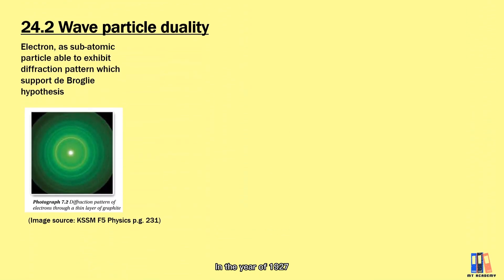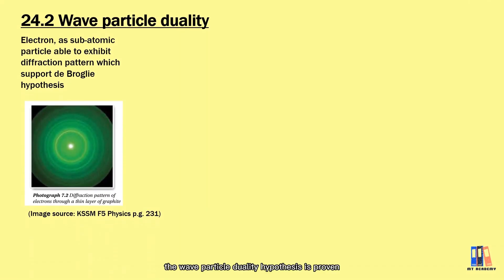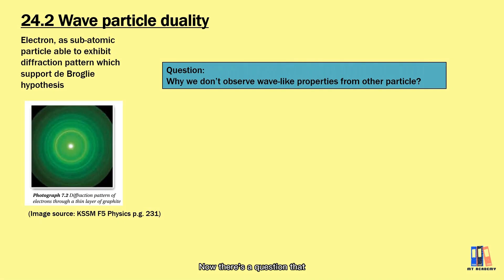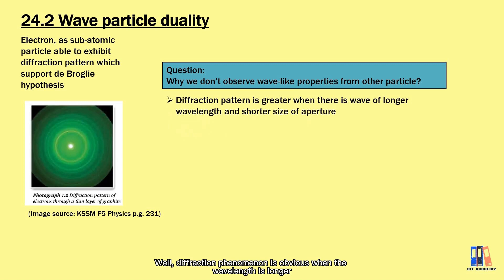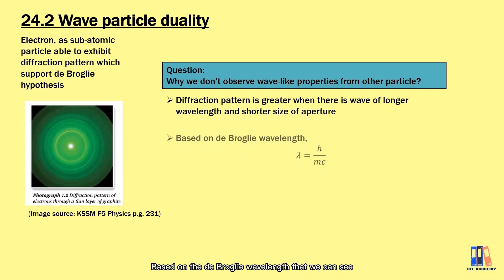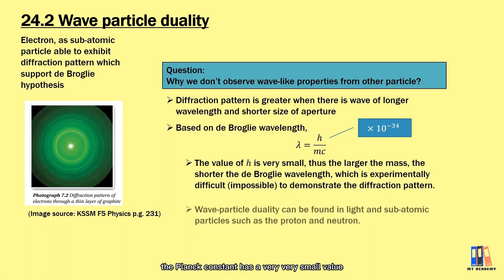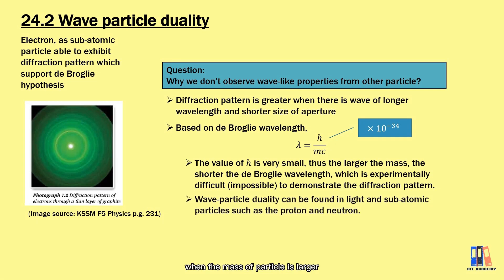In the year of 1927, the wave particle duality hypothesis is proven with the diffraction pattern exhibited by the electron which is clearly a sub-atomic particle. So now, there's a question that why we don't see the wave particle duality in our surroundings. Well, diffraction phenomena is obvious when the wavelength is longer and the size of aperture is smaller. Based on the de Broglie wavelength, we can see the Planck constant has a very very small value. The wavelength is shorter when the mass of particle is larger. This is why we cannot observe the wave particle duality of normal objects because the de Broglie wavelength is too short to demonstrate the wave properties.